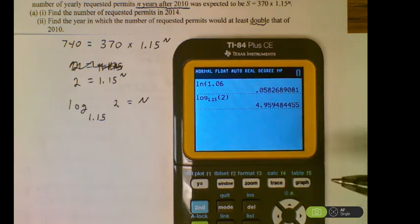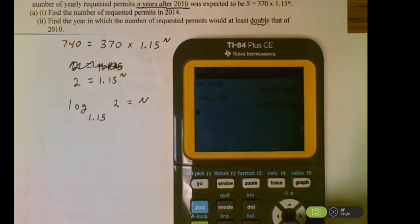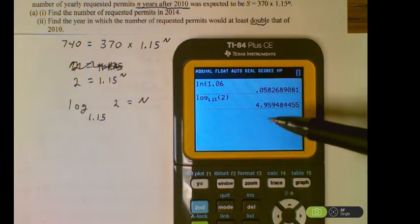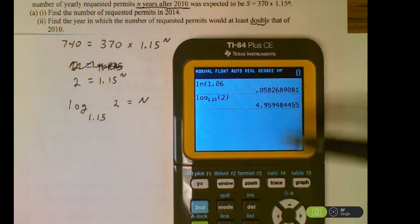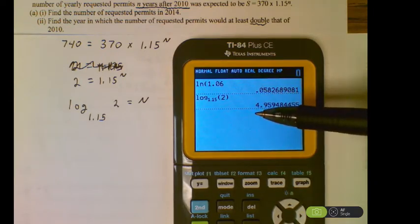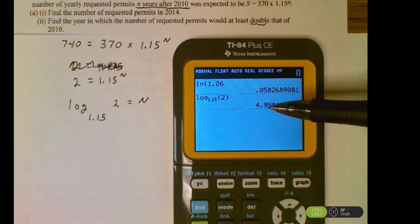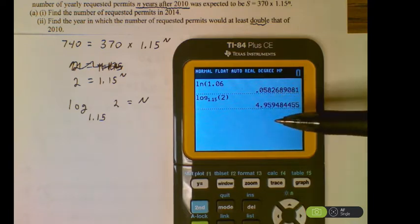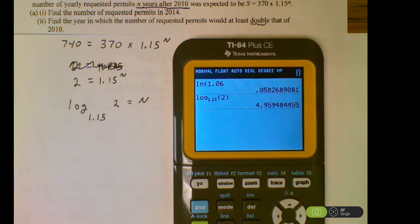Now we just have to interpret that correctly. As you can see by that number, it is shy of 5 years. Which means we have completed 4 years and we are into the 5th year. But we have not yet completed 5 years of time. So we have not yet hit 2015. We are still in 2014 for that. So by the time we hit 2015, we will more than double what we had in 2010.